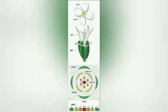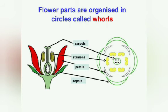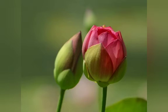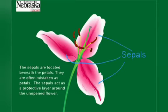Now, the flower has four whorls. If you see clearly, the innermost part is the carpel, next is the stamen, then we have the petal, and then the sepal. In the sepal, you would have seen it is very much visible when the flower is a bud — this protects the flower when it is a bud. The sepals are located beneath the petals and are often mistaken as petals. The sepals act as a protective layer around an unopened flower.